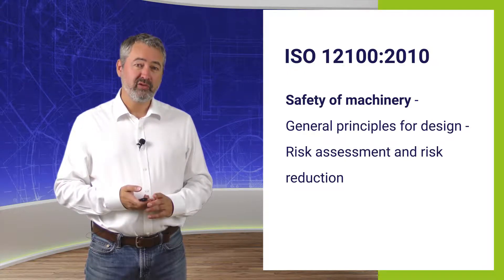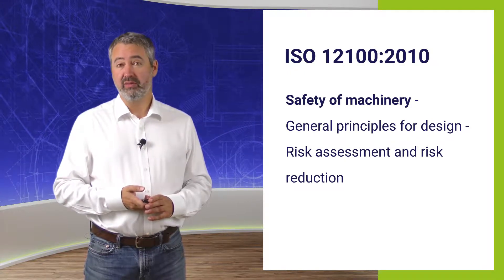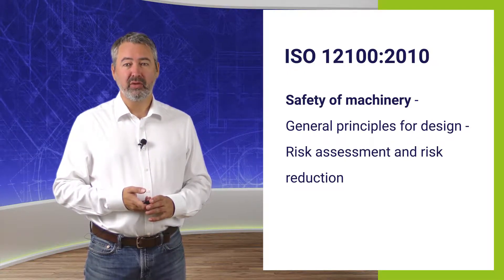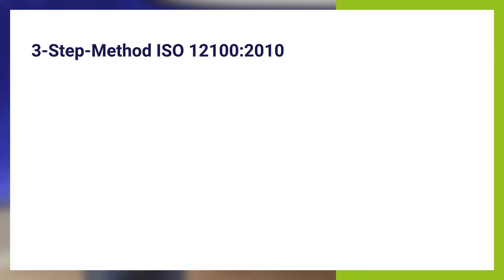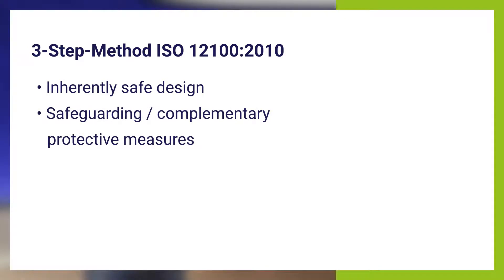I would like to briefly remind you of the three-step method and to look at the individual stages in detail. The first step is referred to as inherently safe design measures, followed by step 2, the safeguarding and/or complementary protective measures. If the measures taken at levels 1 and 2 are not sufficient, the third and last step is to implement user information.